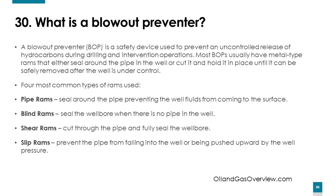What is a blowout preventer? A blowout preventer, or BOP, is a safety device used to prevent an uncontrolled release of hydrocarbons during drilling and intervention operations. Most BOPs have metal-type rams that either seal around the pipe or cut it and hold it in place until the well is under control. The four most common types of rams are: pipe rams, which seal around the pipe preventing well fluids from reaching the surface; blind rams, which seal the wellbore when there is no pipe in the well; shear rams, which cut the pipe and fully seal the wellbore; and slip rams, which prevent the pipe from falling into the well or being pushed upward by well pressure.